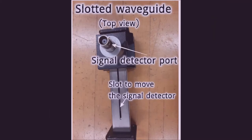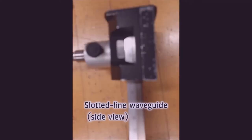A slotted line waveguide is an important component for measuring microwave frequency. The frequency of the gun oscillator is about 10.5 gigahertz — such a high-frequency signal cannot be measured by an oscilloscope, so we use the slotted line waveguide. It is mounted with a diode detector to measure the wavelength and frequency using the SWR meter. There is a millimeter scale marked on the slotted line.